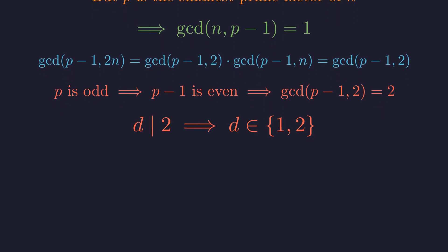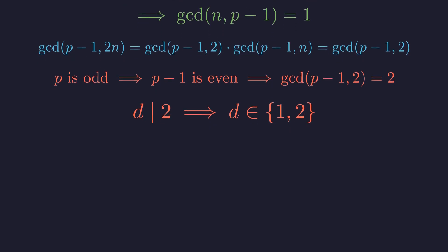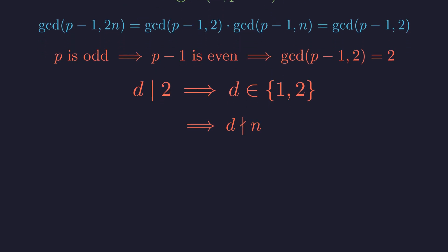Putting it all together, d must divide 2, so d can only be 1 or 2. But we already established that d cannot be 1, because 2 to the n is not congruent to 1 modulo p.